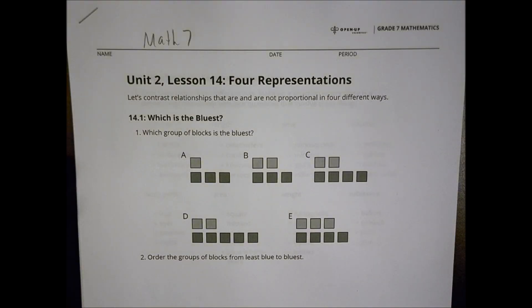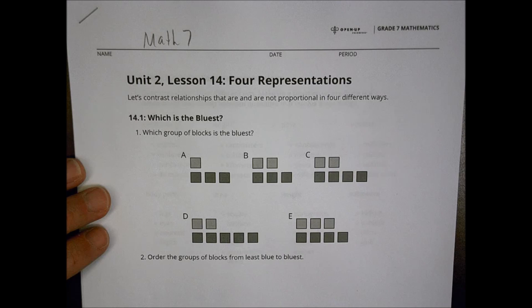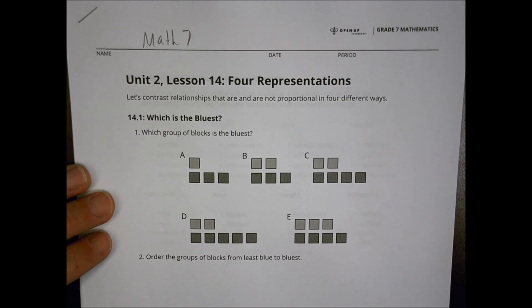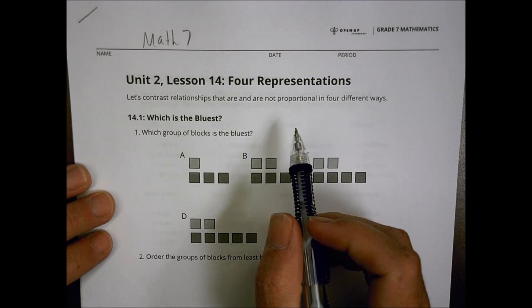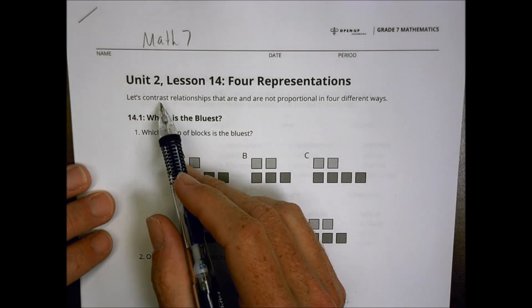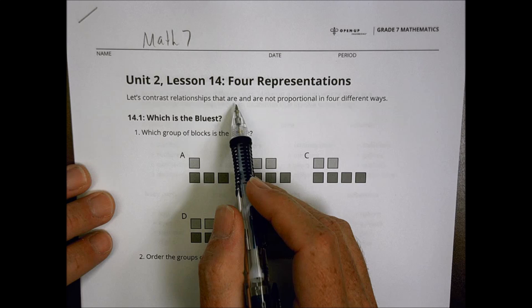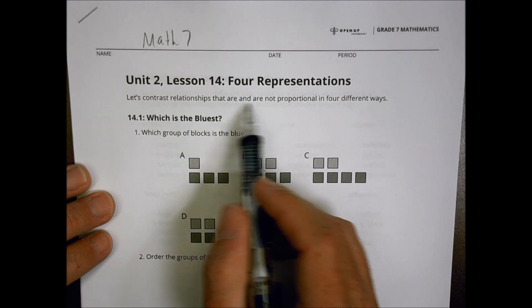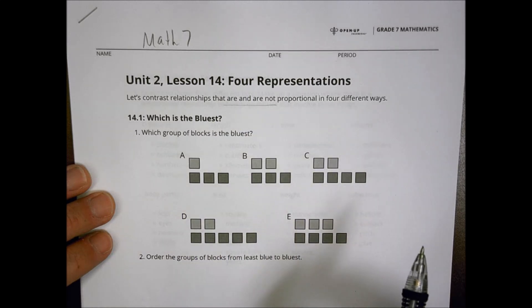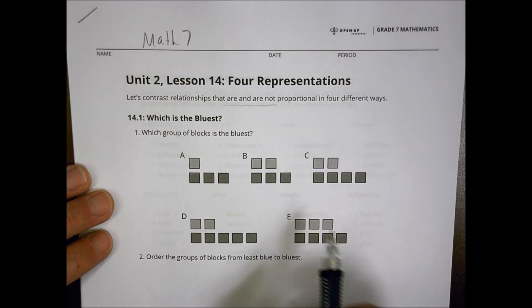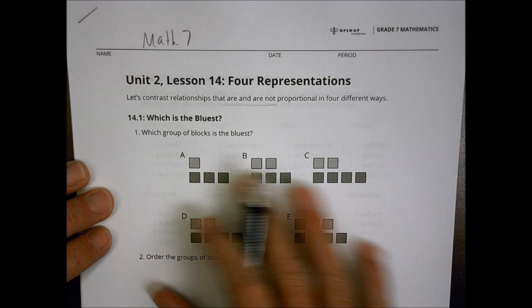This is Math 7, Unit 2, Lesson 14, called 'Four Representations.' We're going to be talking about contrasting relationships that are and are not proportional in four different ways.